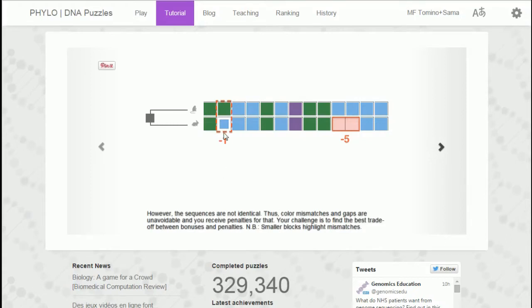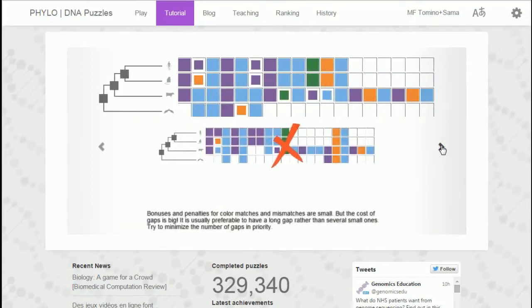Smaller blocks highlight mismatches. Bonuses and penalties for color matches and mismatches are small, but the cost of gaps is big. It's usually preferable to have a long gap rather than several small ones. Try to minimize the number of gaps.